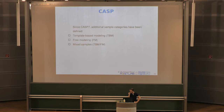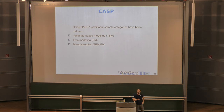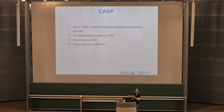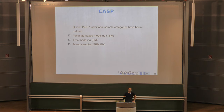Since CASP 7, there are also different sample categories. Some samples have many homologous structures — template-based modeling targets where comparative modeling is feasible. Others have no such templates — free modeling targets requiring de novo prediction. Mixed samples in between are called TBM-hard or TBM-FM, and are typically approached from both sides.